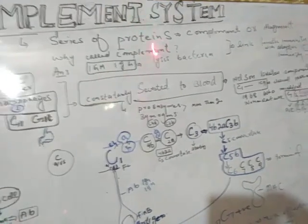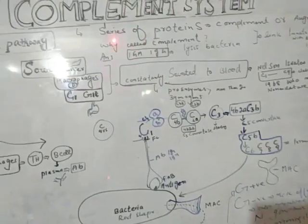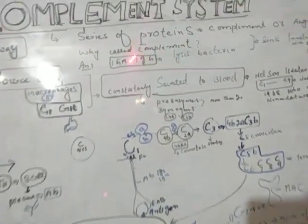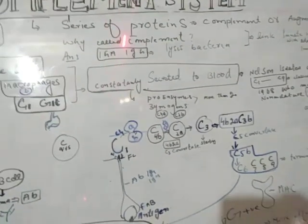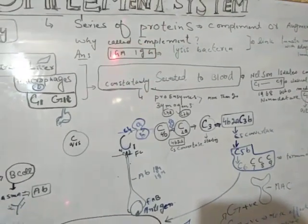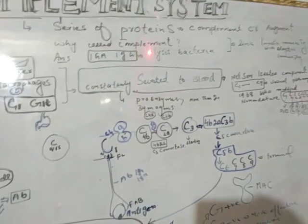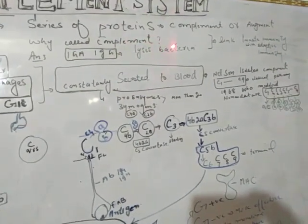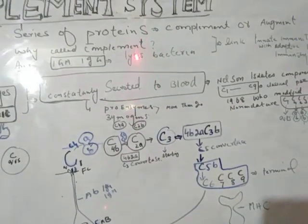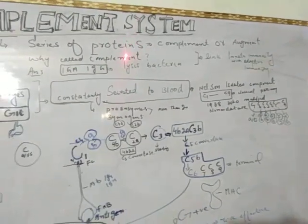Why is it called the complement system? The simple answer is that IgA and IgG antibodies complement the ability to fight bacteria or pathogens and create an inflammatory response — hence the name complement system.